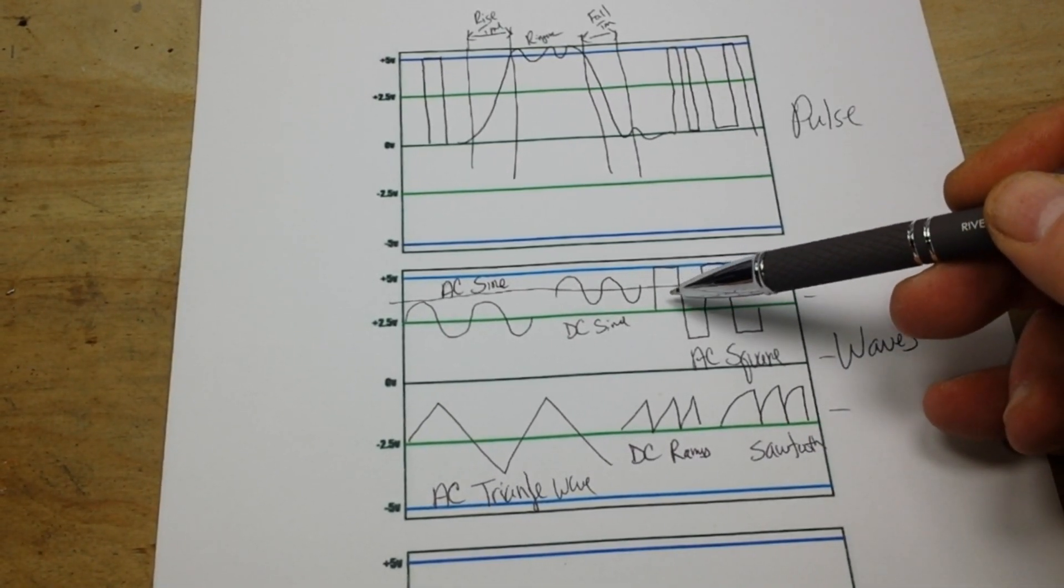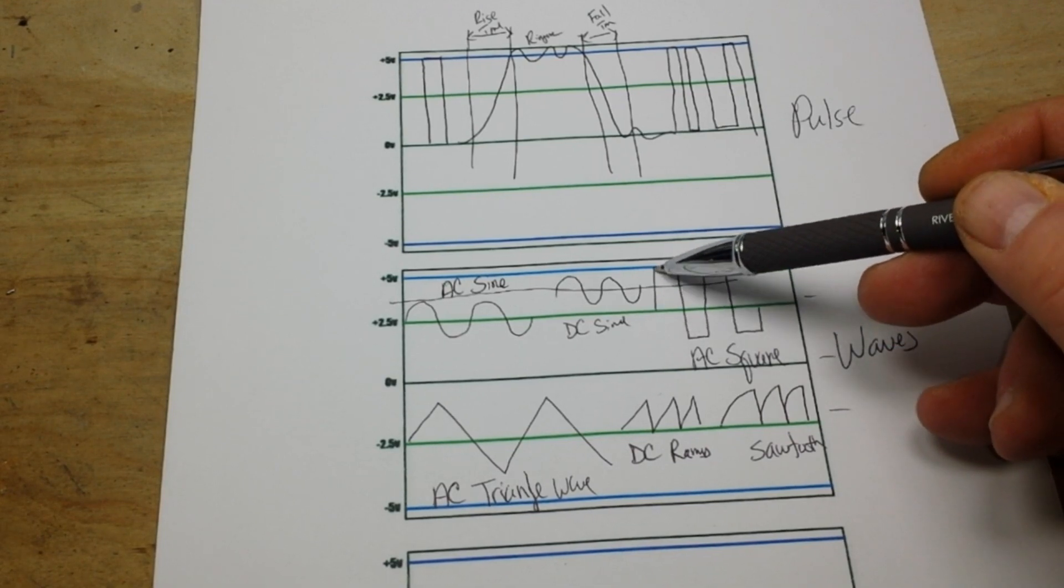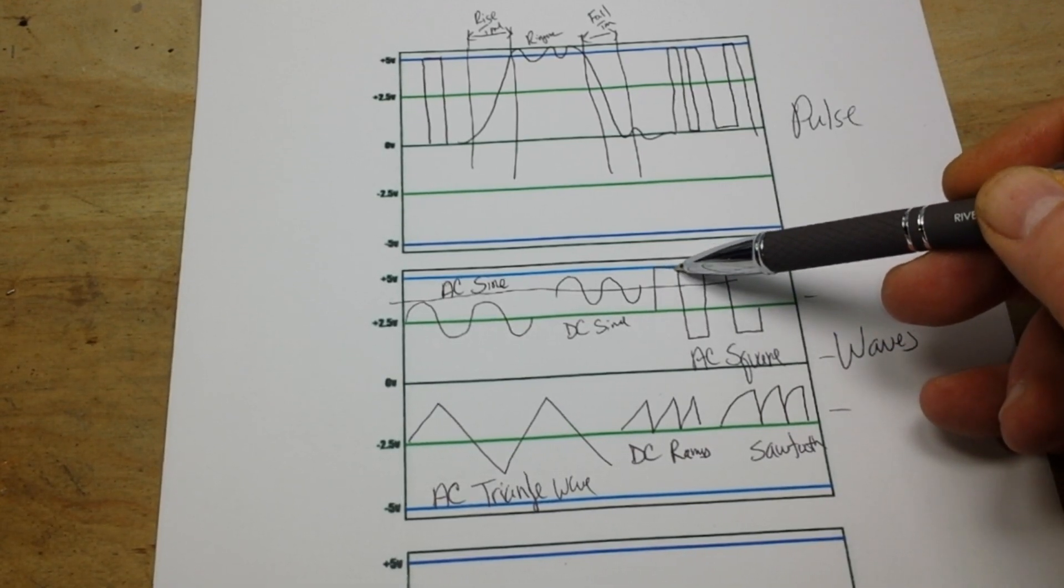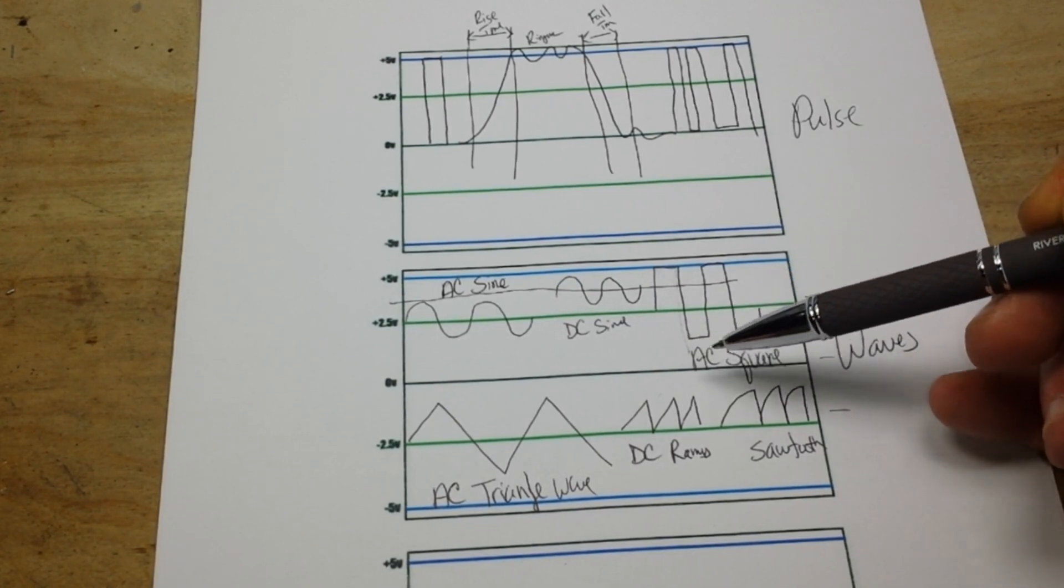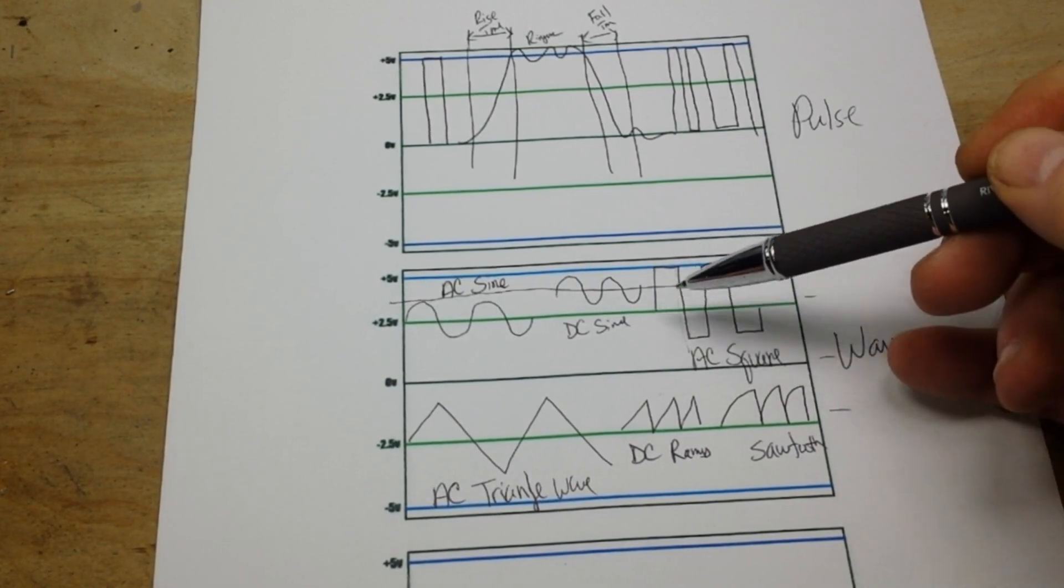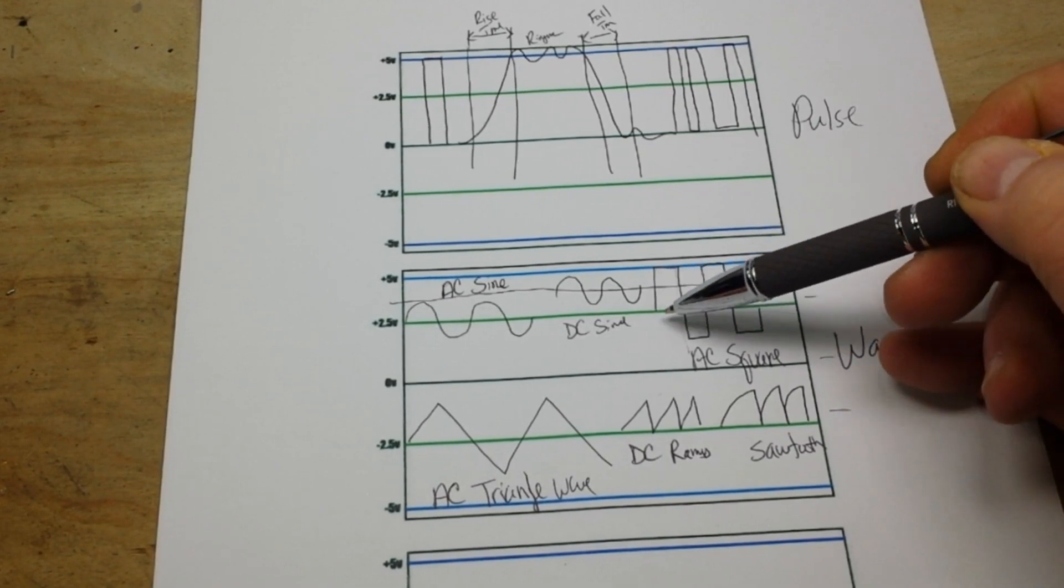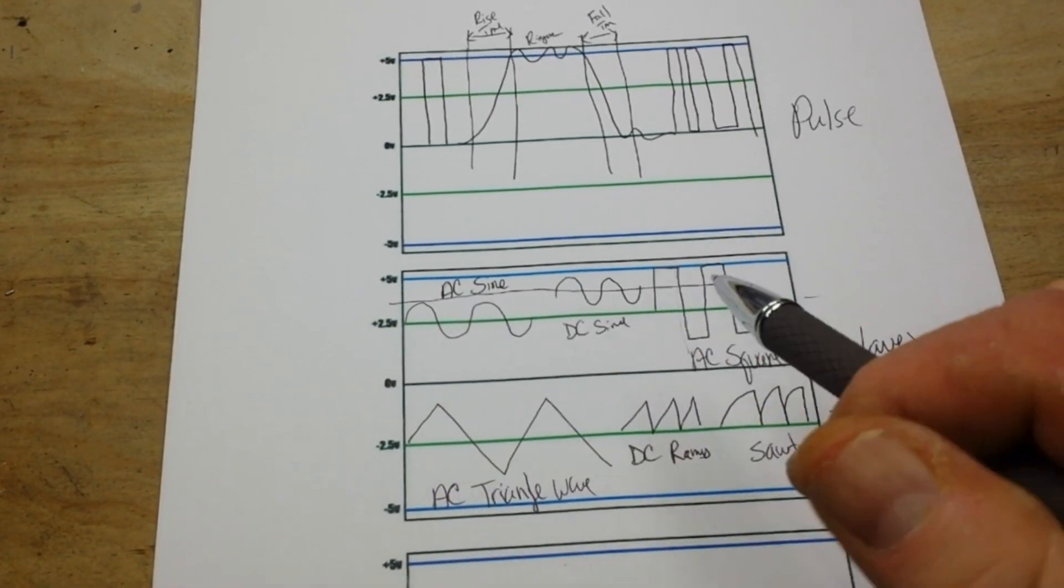Okay, AC square wave, AC square wave: more or less instantaneous on, on for a period, more or less instantaneous off, off for a period. Oscillates from full on to full off in a very short period of time, and it oscillates about our zero point.